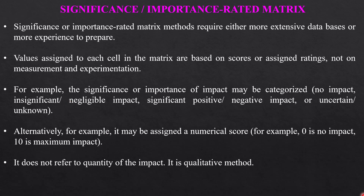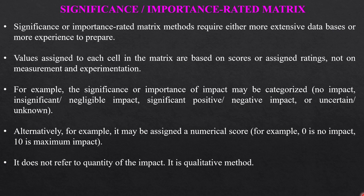The significance or importance-related matrix method requires either a more extensive database or more experience to prepare. Values assigned to each cell of the matrix are based on scores or assigned ratings, not on measurement and experimentation. For example, the significance or importance of impact may be categorized as: no impact, insignificant or negligible impact, significant positive impact, significant negative impact, or unknown or uncertain. Alternatively, it may assign a numerical score — for example, 0 for no impact or 10 for maximum impact — so it does not refer to quantity of impact; it is a qualitative method.